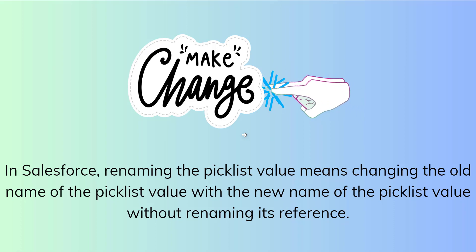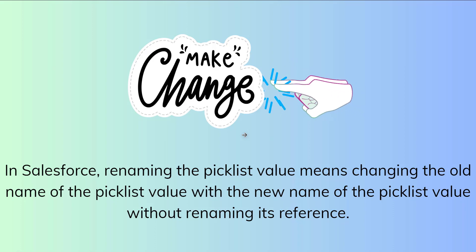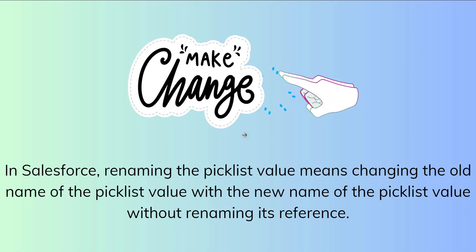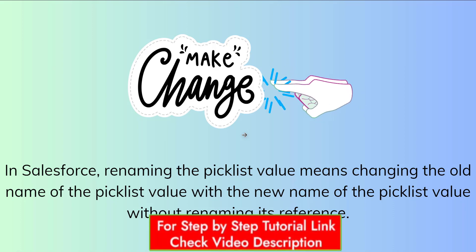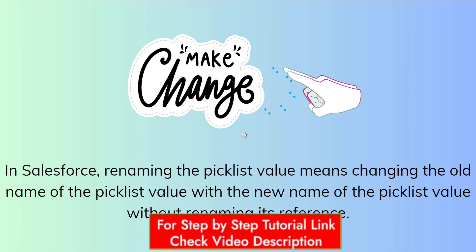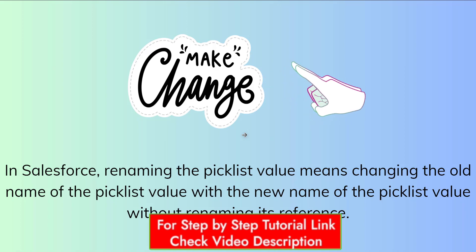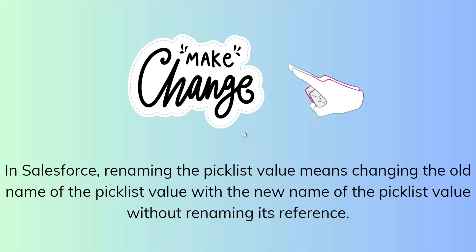Let's understand renaming with a small example. For example, suppose I mistakenly typed the name of a picklist value incorrectly — I wanted to type 'In Progress' but I typed the spelling of 'Progress' incorrectly. Now, how can I change it? I don't delete this picklist value; I simply change the name by renaming it. When I rename it, it successfully changes to the correct value.